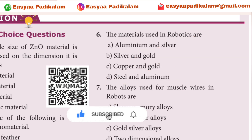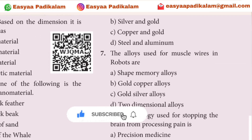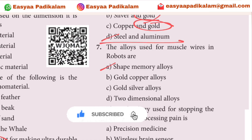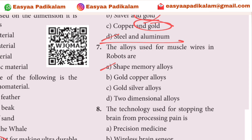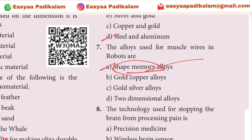We are ready to use the robot. The alloys are used for muscle wires in robots. So the answer is shape memory.